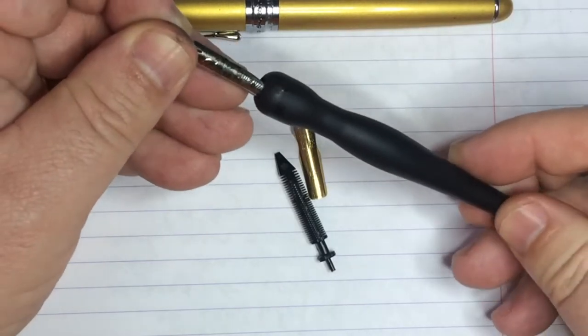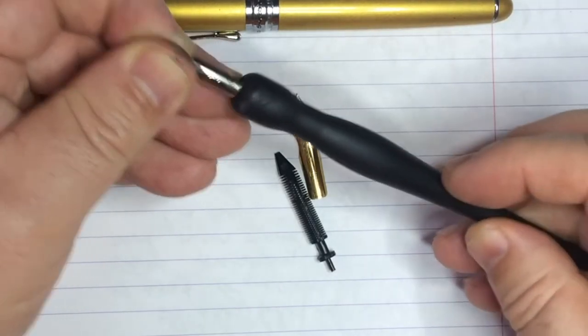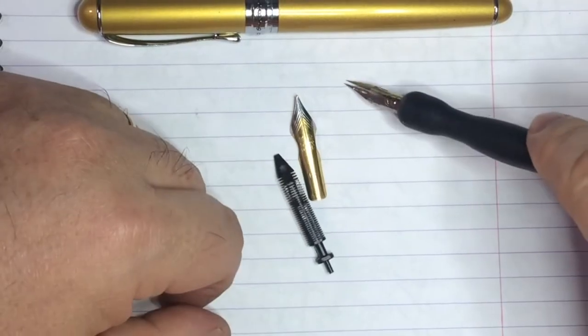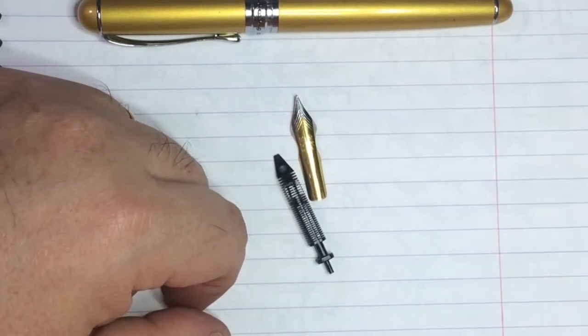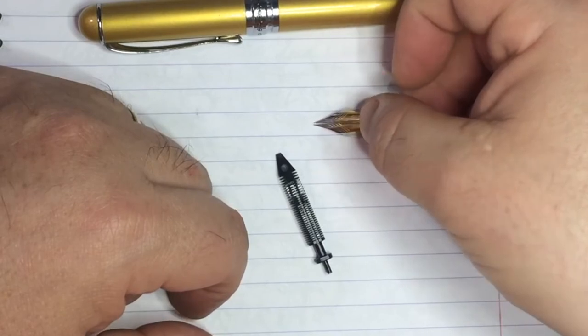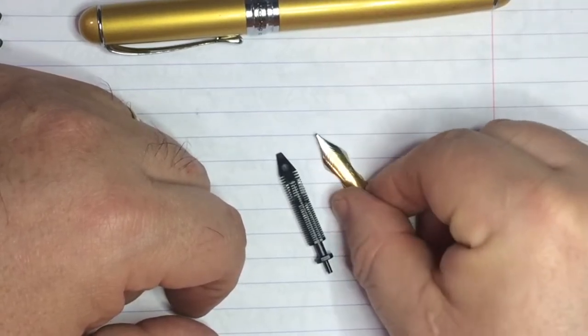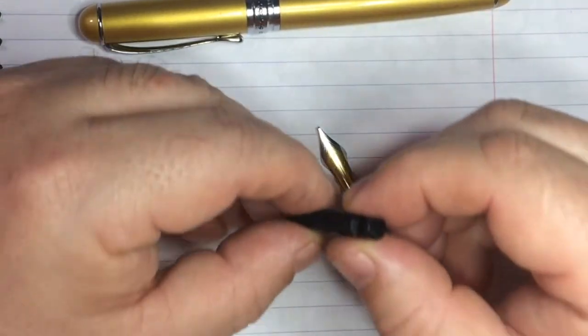This nib actually goes in this nib holder, or a handle here for my dip pen. This is a flex. See how that flexes? And this nib is also a flex nib for fountain pen. It doesn't flex as much, but it doesn't need to. So, let's start putting this on.